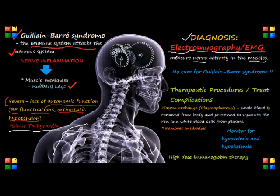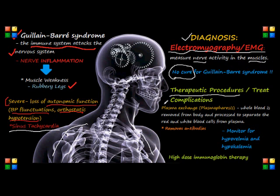Until today, there is no known cure for Guillain-Barre syndrome. However, there are therapies — what we call therapeutic procedures — that can help lessen the severity of the illness and hopefully accelerate the recovery of our patients. There can be several ways to treat the complications of this disease, but the two most common therapeutic procedures you really need to know for your NCLEX exam would include plasma exchange.